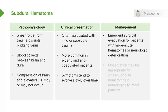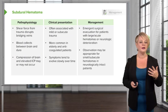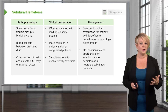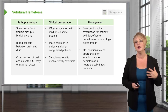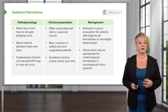Patients with large hematomas, significant mass effect, or significant neurologic dysfunction require emergent surgical evacuation. However, for small bleeds, it might be appropriate to simply observe the patient if they're neurologically intact and see if the blood is continuing to accumulate, if the bleed is expanding, or if the patient is getting worse.